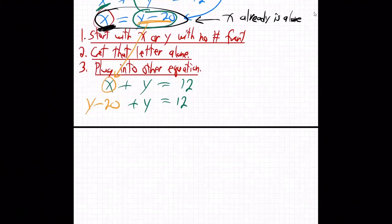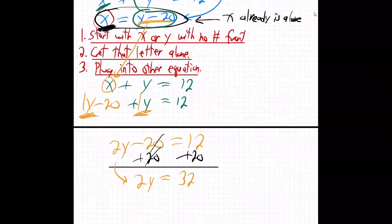So now let's work that out. What do we have? Y plus Y. This is 1Y and 1Y. This is 2Y minus 20, isn't it? 1Y and 1Y on the same side makes 2Y. And then add the 20 over. 2Y, and we get 2Y. Bring this down. 2Y is 32.